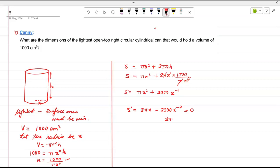So 2 pi x is equal to 2000 upon x square. So x cube is equal to 2000 divided by 2 pi. So you cross multiply. Use your calculator and get the value of x. X is equal to cube root of 2000 upon 2 pi.